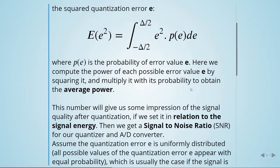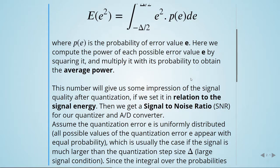We assume the quantization error is uniformly distributed, meaning all possible values of the quantization error e appear with equal probability. This is usually the case when the signal is much larger than the quantization step size Δ.